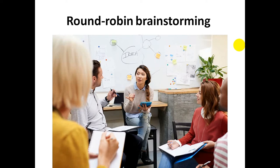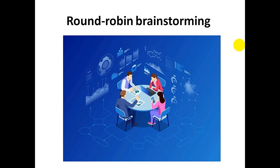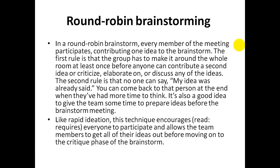Round robin brainstorming is a technique where every member of the meeting participates, contributing one idea to the brainstorm. The first rule is that the group has to make it around the whole room at least once before anyone can contribute a second idea or criticism, elaborate on, or discuss any of the ideas. The second rule is that no one can say 'my idea was already said' — you can come back to that person at the end when they have had more time to think.